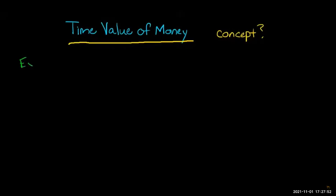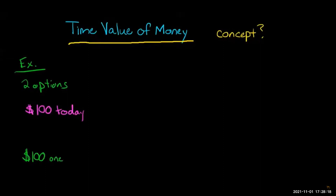Let's say I offer you two options. Option one: I give you $100 cash today. Option two: I give you $100 one year from now. Let's assume that the $100 one year from now is certain — guaranteed. You either get $100 today or $100 one year from now, but either way there's no risk associated with it. So which would you prefer?